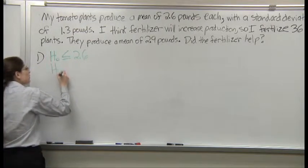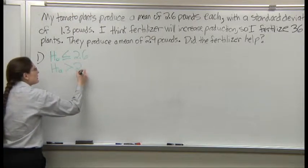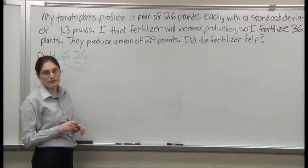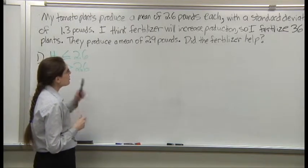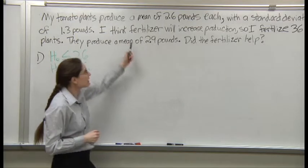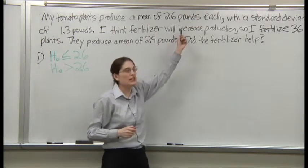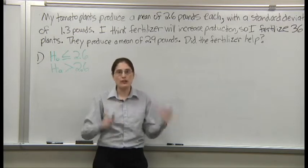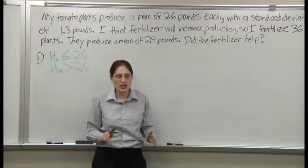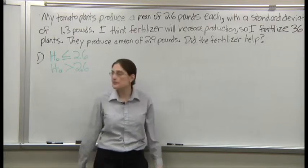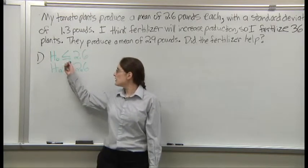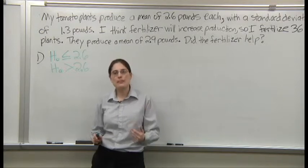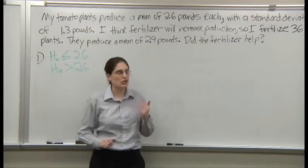The alternate hypothesis is that the fertilizer did help — the mean got bigger. Here we specified a direction: the fertilizer will increase production. I'm hoping to find more tomatoes, not just any change in tomatoes — more tomatoes. So this is a one-tailed test because direction matters. We picked a direction in the beginning.